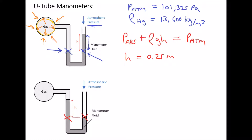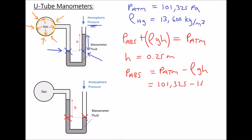Now if we want to determine the absolute pressure, so P abs, we can rearrange that formula by subtracting rho GH from each side and we get P abs equals P atm minus rho GH. Plugging in our numbers: 101,325 minus 13,600 times 9.81 times 0.25, and that gives us an absolute pressure equal to 68.0 kPa.